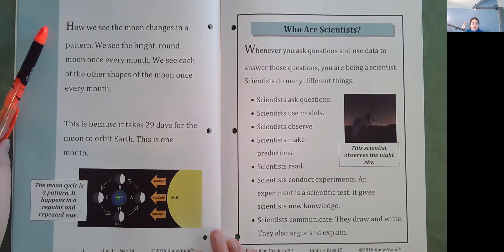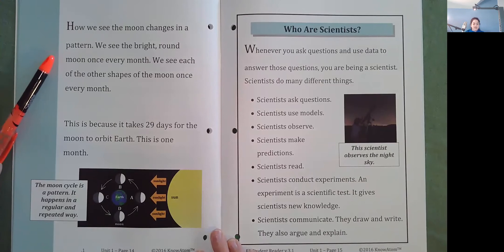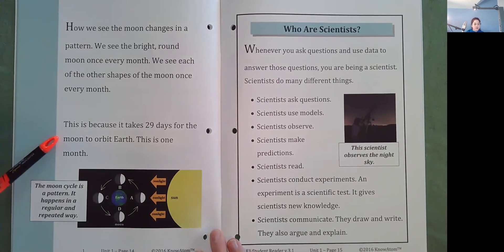How we see the moon changes in a pattern. We see the bright, round moon once every month. We see each of the other shapes of the moon once every month. This is because it takes 29 days for the moon to orbit the Earth. This is one month. The moon cycle is a pattern. It happens in a regular and repeated way.